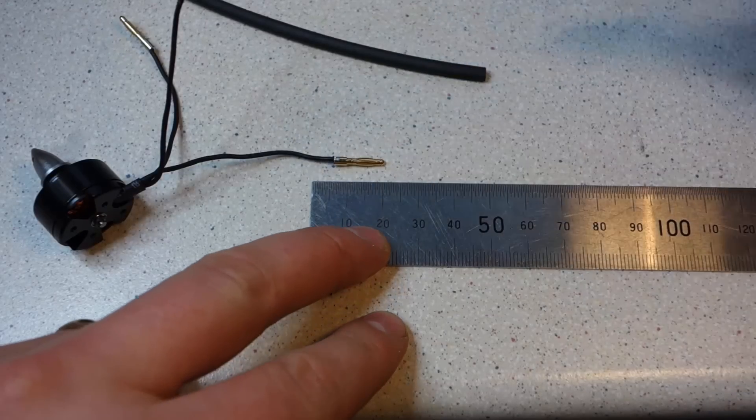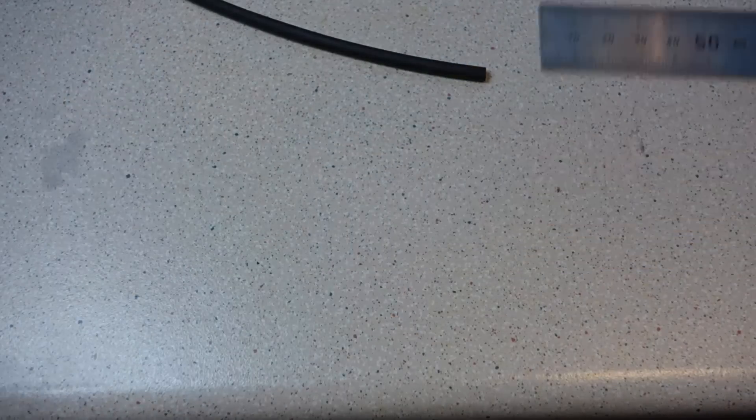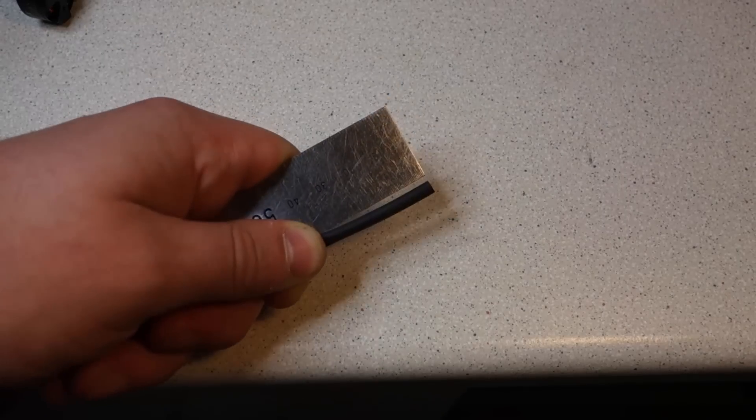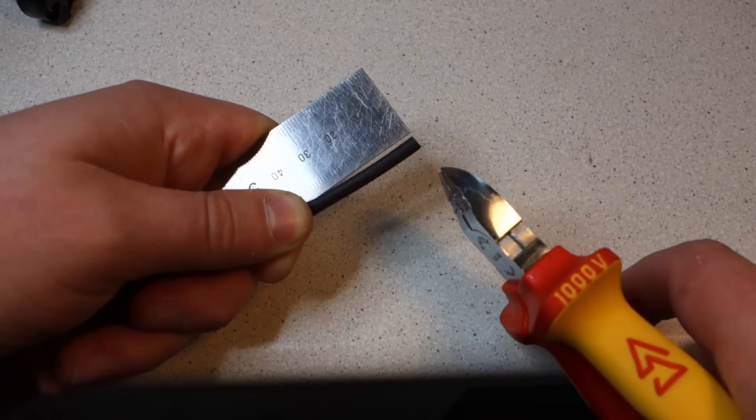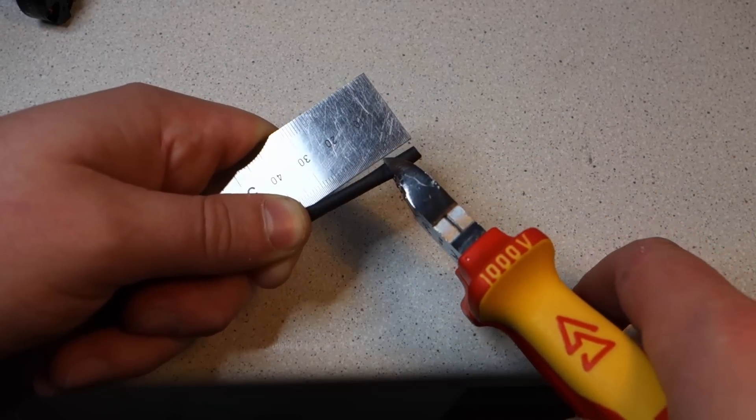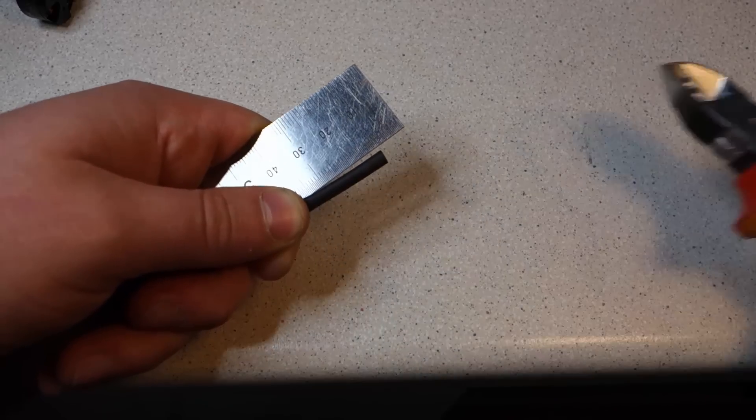The heat shrink needs to cover as much of the connector as possible without stopping the opposite connector from going on. It also needs to cover any bare wire and a few more millimeters on top of that. I'm using 1 1⁄8 inch diameter heat shrink and it looks like a 10mm length should do the job nicely.